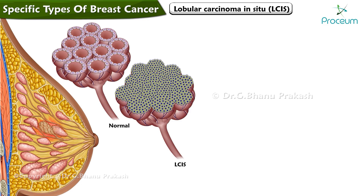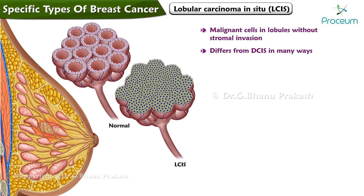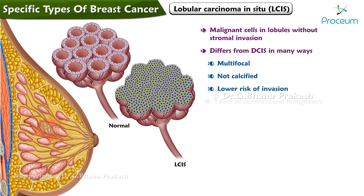Lobular carcinoma in situ is a type of breast cancer characterized by malignant cells in lobules without stromal invasion. It differs from ductal carcinoma in situ in many ways: it can be multifocal, its lesions are not calcified, and it carries a lower risk of invasion than ductal carcinoma in situ but an increased risk of contralateral malignancy.